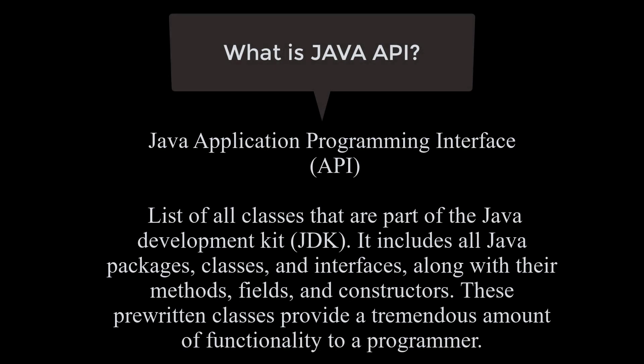Hi, everyone. Today, I want to talk to you about Java API, which happens to be a very popular question. So let's talk about what is API. Java API stands for Java Application Programming Interface, and the textbook definition of Java API says that it is a list of all classes that are part of the Java Development Kit, JDK.